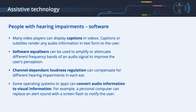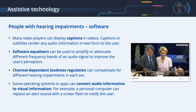Assistive technology for people with hearing impairments — Software. Beyond hardware solutions, there are also software solutions for people with hearing impairments. Many video players can display captions in videos. Captions or subtitles render any audio information in text form to the user. The same technology can also be used to display audio information in text form using different languages, which makes this technology very useful to many more users. Please refer to the audio-visual chapter for more information about captions.